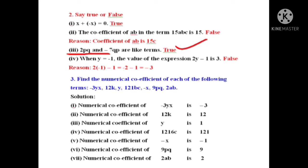When y is equal to minus 1, the value of the expression 2y minus 1 is given. Substitute y equals minus 1: 2 into minus 1 equals minus 2. Then minus 2 minus 1 equals minus 3. But the question states the answer as 3, which is wrong. So this statement is false.